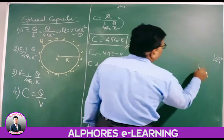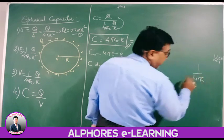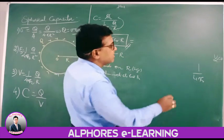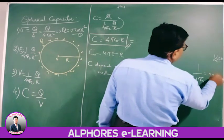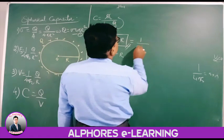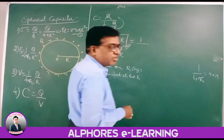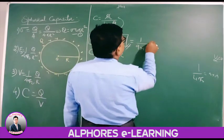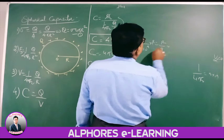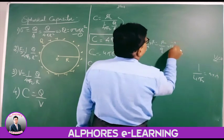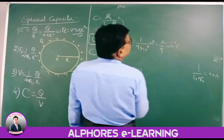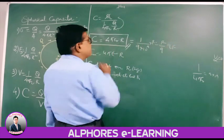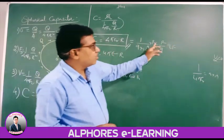We know from Coulomb's law that 1/4πε₀ = 9×10⁹. So 4πε₀ = 1/(9×10⁹). Therefore, C = R/(9×10⁹) = R × 10⁻⁹ farads. Since 10⁻⁹ is nano, we can simply write: for a spherical capacitor, the capacity is C = R/9 nanofarads.